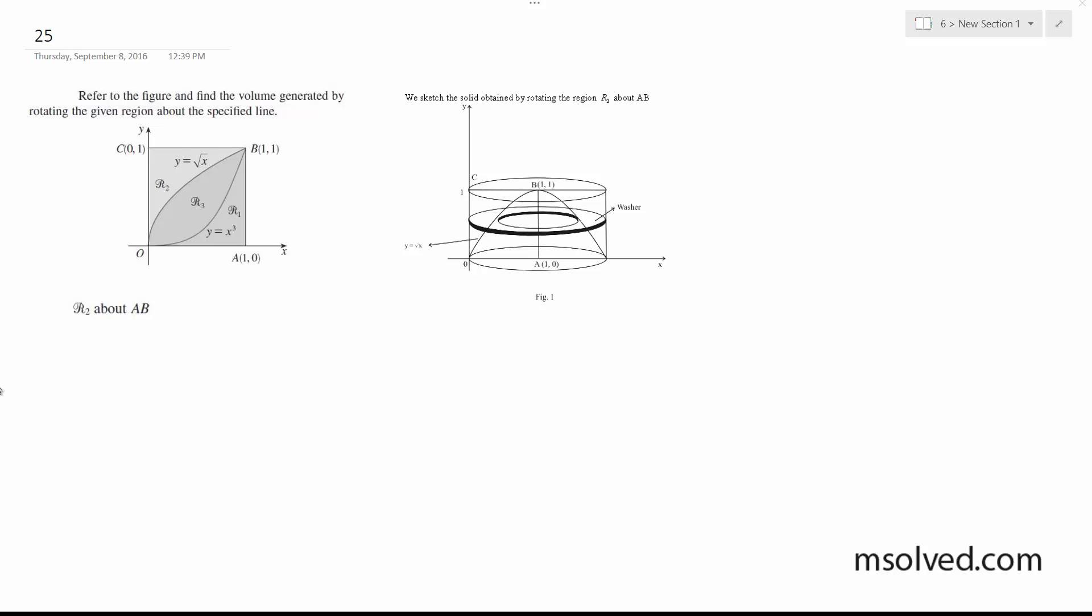All right, so we're going to flip R2, which is this in here, about AB. And AB is this. So it's something like this. So you're flipping it like this. Okay, so setting this up,